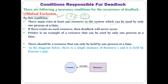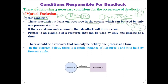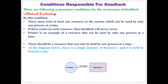An example of mutual exclusion is the printer. A printer is a resource which can be utilized by only one process at a time — only one user can print at a time. If Process P1 is printing, another user P2 cannot print at that same time; P2 must wait until P1 finishes printing. Printer is a mutually exclusive resource.